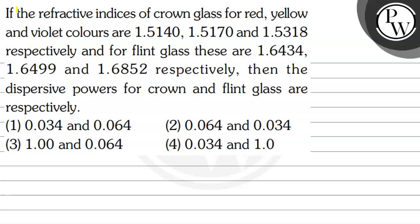Hello Bacho! Let's read the question. The question says: if the refractive indices of crown glass for red, yellow and violet colours are 1.5140, 1.5170 and 1.5318 respectively, and for flint glass these are 1.6434, 1.6499 and 1.6852 respectively, then the dispersive powers for crown and flint glass are respectively.